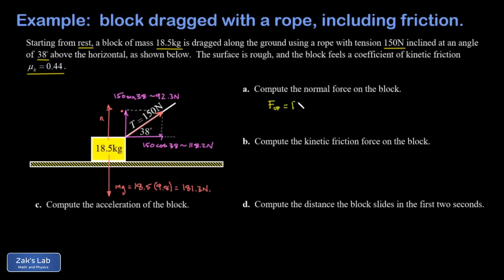So it's fair to start this way. I can say F up equals F down. I have a normal force pointing up and I have a 92.3 newton component of the tension pointing up, and I have gravity pointing down. When I enforce this idea that the y direction forces are balanced, I can find my normal force and this comes out to 89.0 newtons.